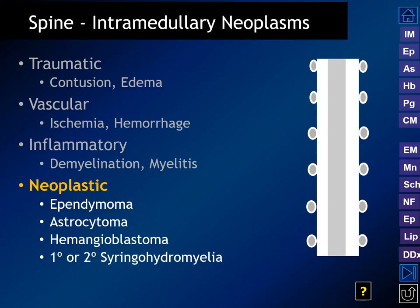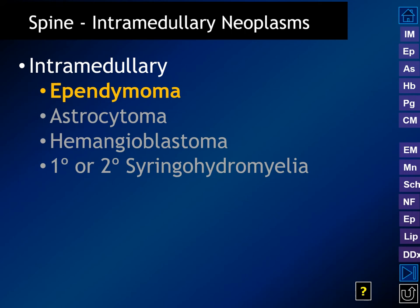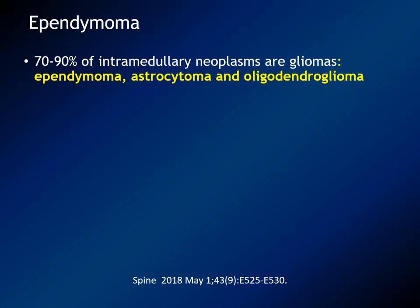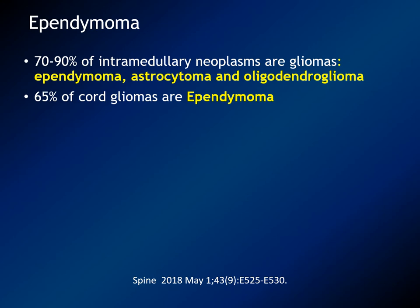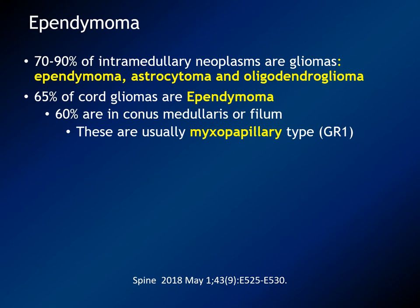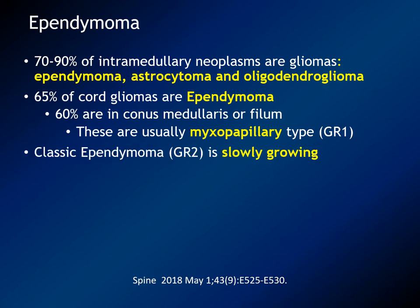Focusing now on neoplastic diseases, we recognize intramedullary tumors because they cause expansion of the diameter and volume of the spinal cord. About 70–90% of intramedullary primary neoplasms are gliomas, most commonly ependymoma and astrocytoma, and rarely oligodendroglioma. About 65% of cord gliomas are ependymoma, and there are two flavors: WHO grade 2 intramedullary ependymomas, and the myxopapillary type, which are grade 1 tumors. These tumors may involve the cord or appear to be in the subarachnoid space.